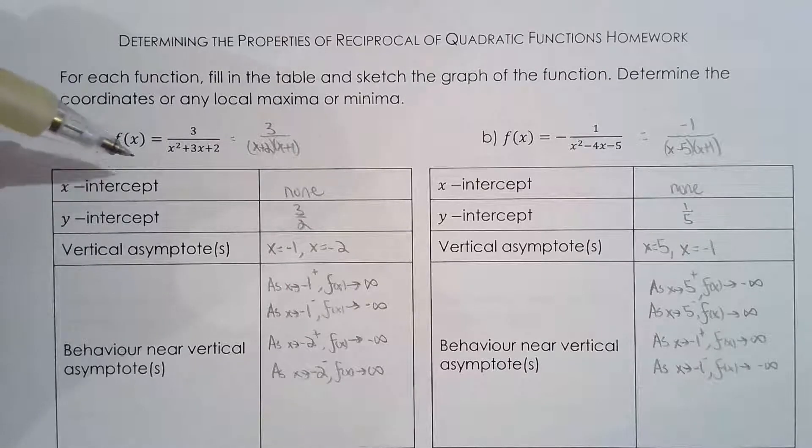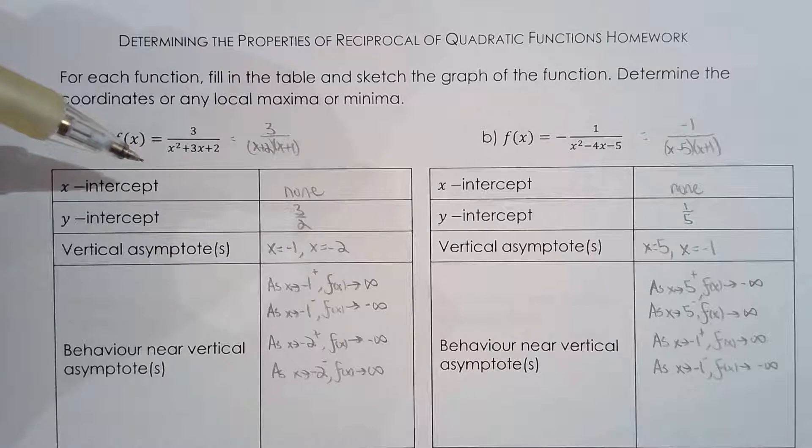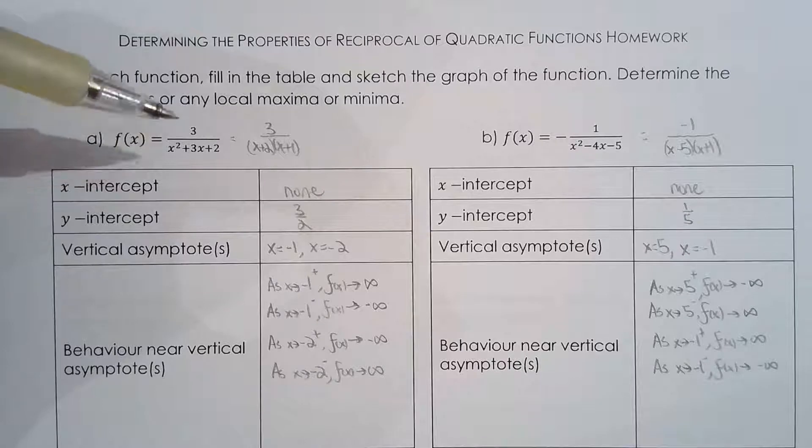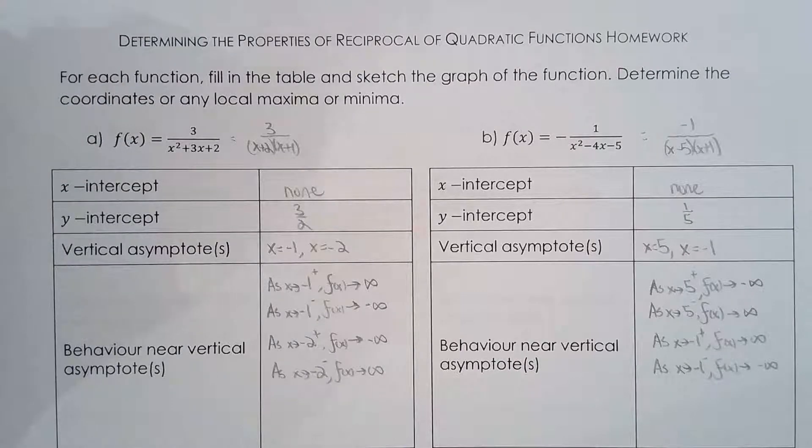If discriminant is positive that means you have two vertical asymptotes. If it's equal to zero you have one vertical asymptote, and if you have a discriminant which is negative then you have no vertical asymptotes. Just really have a quick sketch of all three different scenarios and that way it would really help when you actually have the graph.